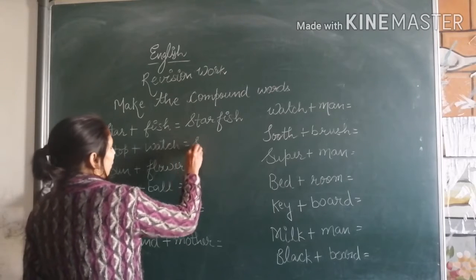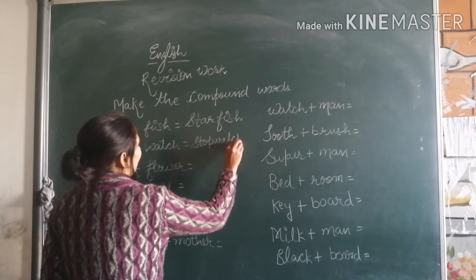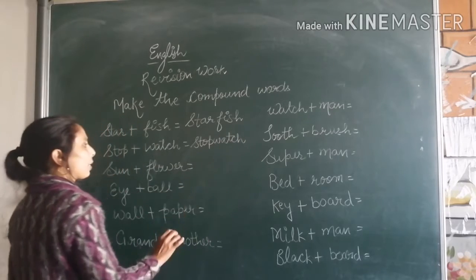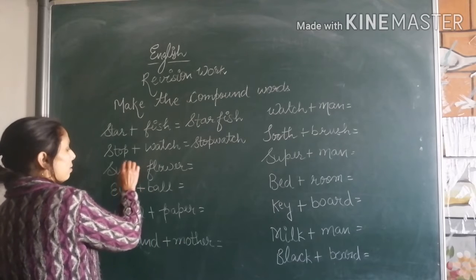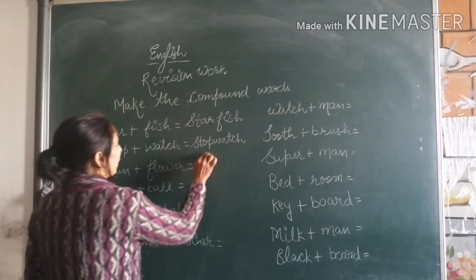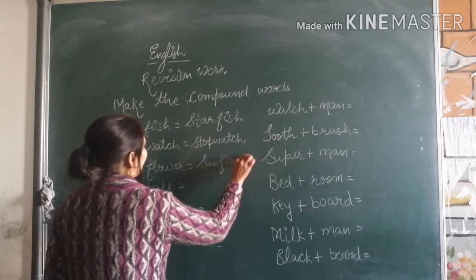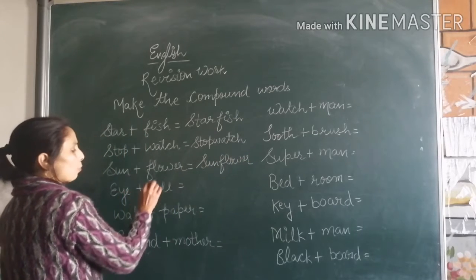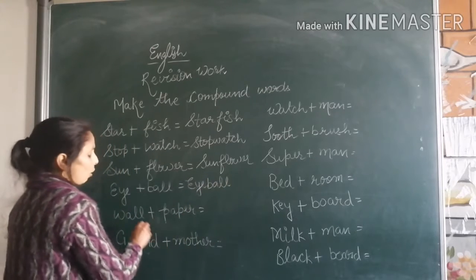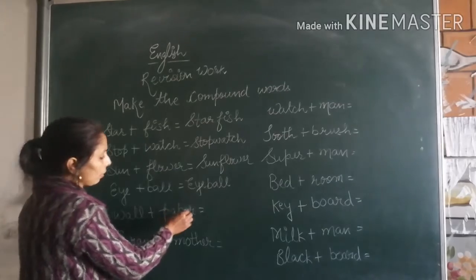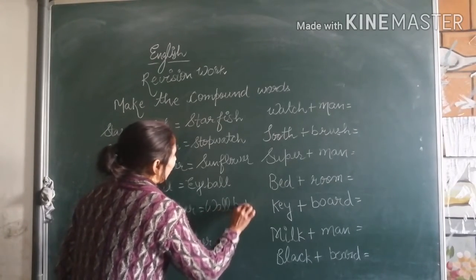Stop plus watch — nothing changes, no change — we will make one word: stopwatch. When you add sun plus flower you get a new word: sunflower. Eye plus ball gives you a new word: eyeball. Wall plus paper gives you a new word: wallpaper.